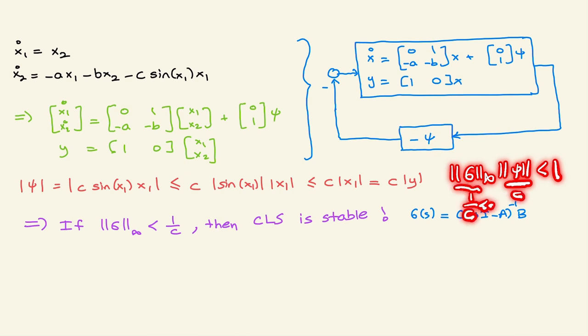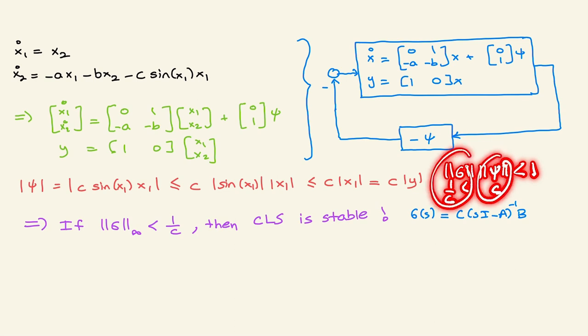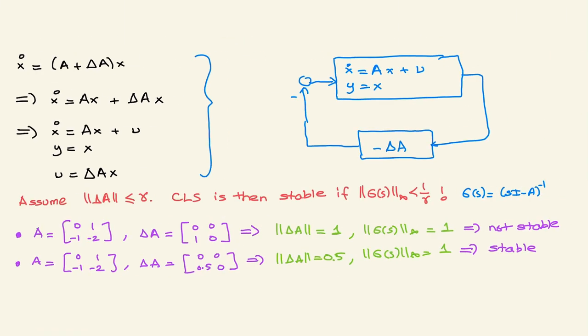More precisely: phi is bounded by c, and the H-infinity norm of G needs to be less than 1/c so that the product is less than one. Another application is assessing stability under uncertainties.